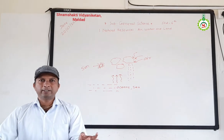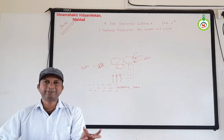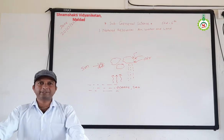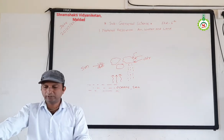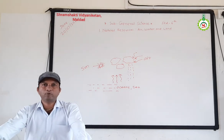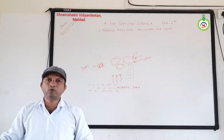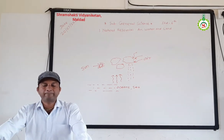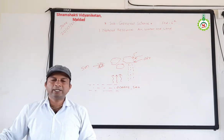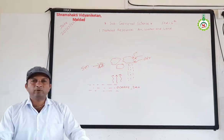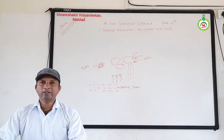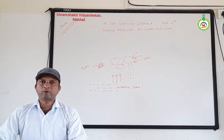We get water from natural resources. The sources of water include lakes, streams, rivers, and wells. Man has also constructed dams and borewells from which we get ground water. Man has also constructed dams, for example the Guntadara dam or Mervanda dam, for storing water from rain.